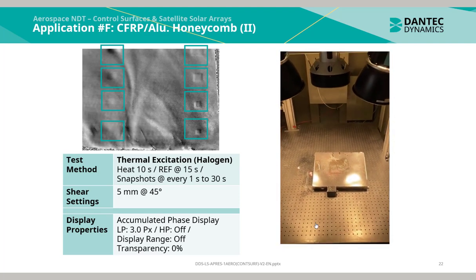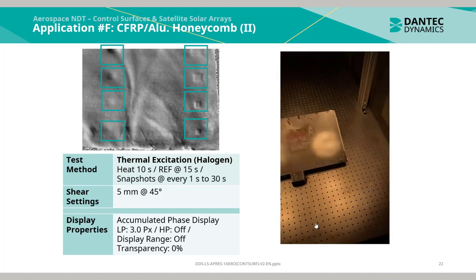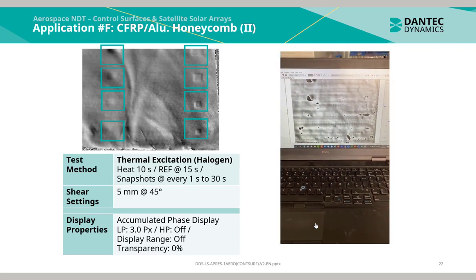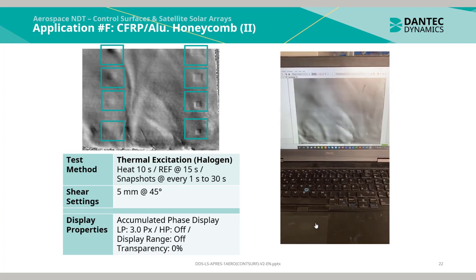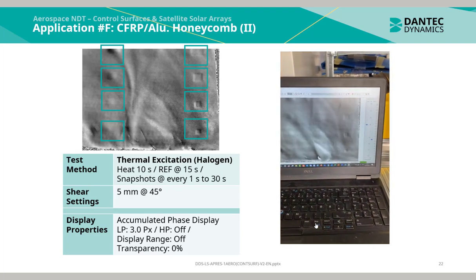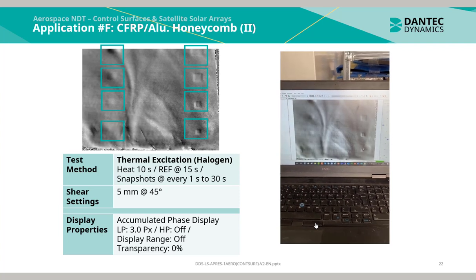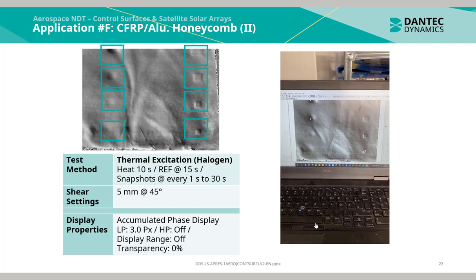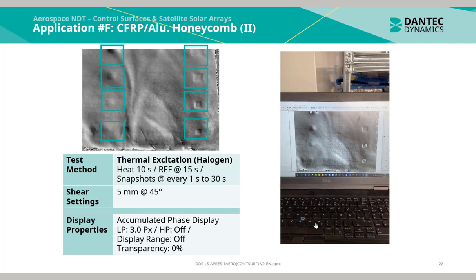On the right hand side there is a video of the measurement procedure. After the application of 10 seconds of heat, there was a delay of 5 seconds before the reference step was acquired. From then on, a snapshot image was taken every second up to 30 seconds. There are 8 indications in the measurement — inserts on one side and local disbonding on the other.